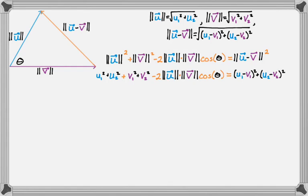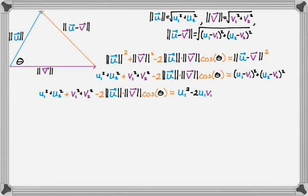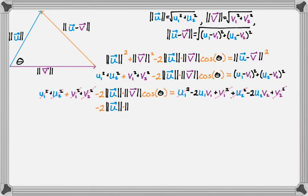The left-hand side stays the same. On the right-hand side I expand: I get u1 squared minus 2u1v1 plus v1 squared, plus u2 squared minus 2u2v2 plus v2 squared. Looking at both sides, u1 squared, u2 squared, v1 squared, and v2 squared all appear on both sides, so we can cancel them, leaving just the remaining terms.